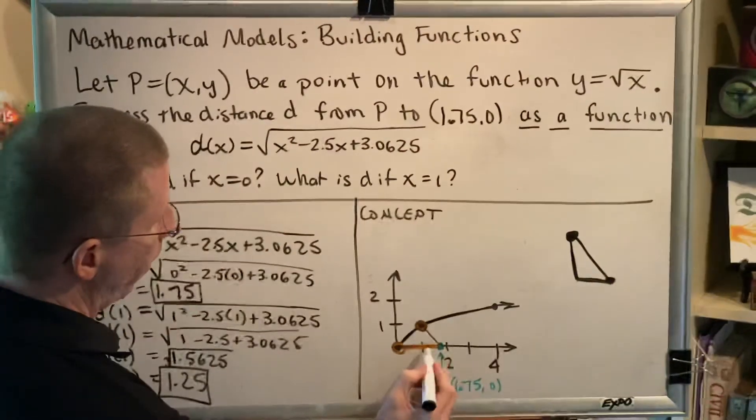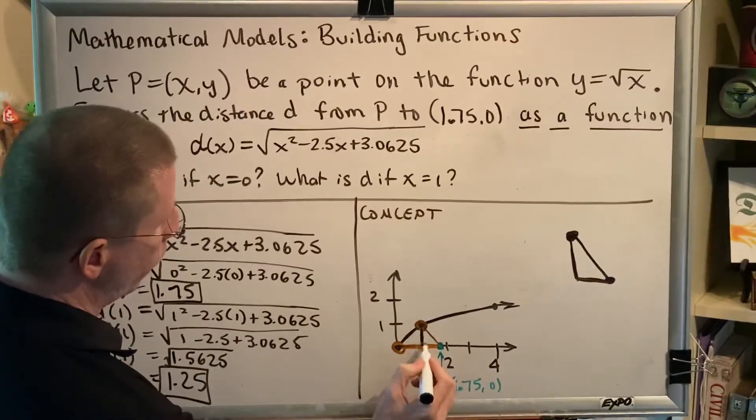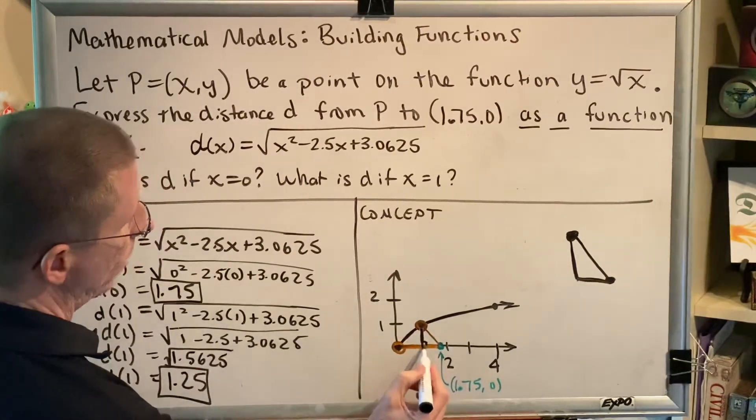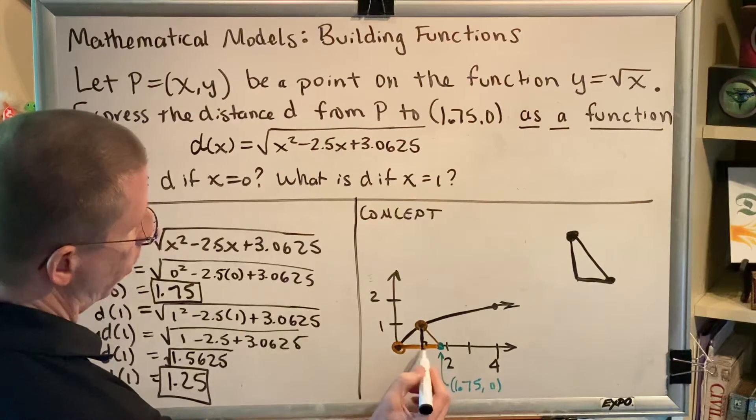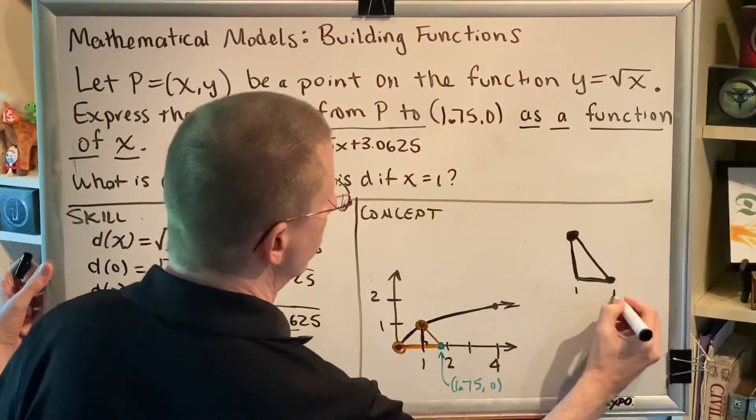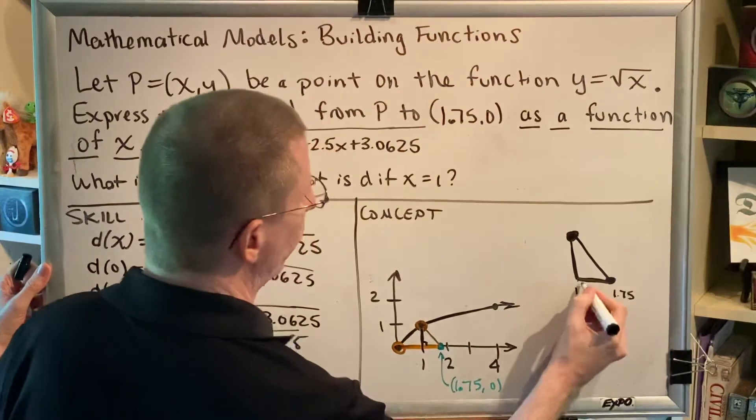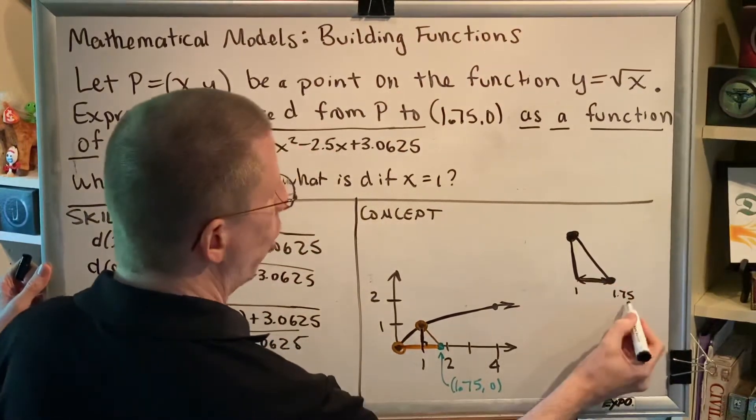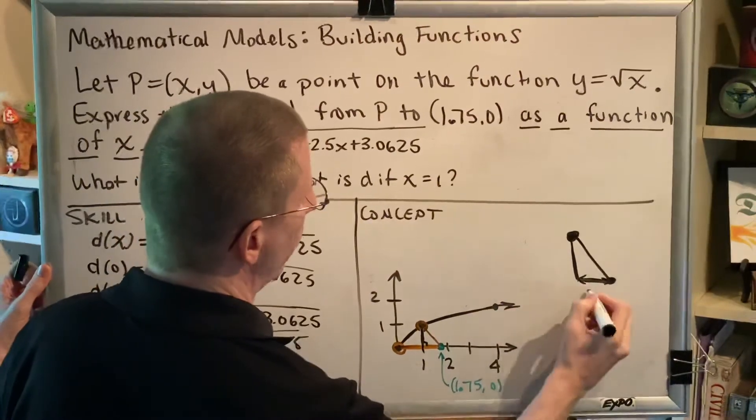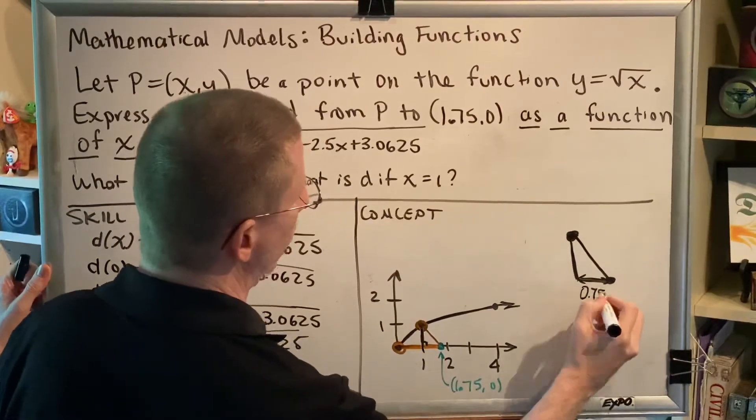So for example, we know that this right here, the base of our triangle, the corner, the right angle of our triangle, is at 1 on the number line. And this is at 1.75. So if this is at 1 and this is 1.75, we can figure out how far this is by subtraction. 1.75 minus 1 is 0.75. So this distance is 0.75.